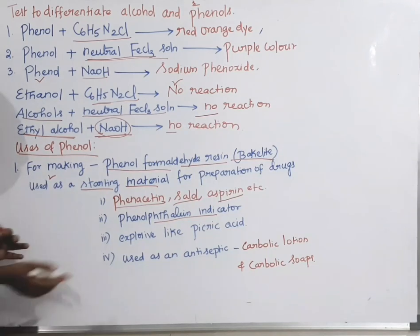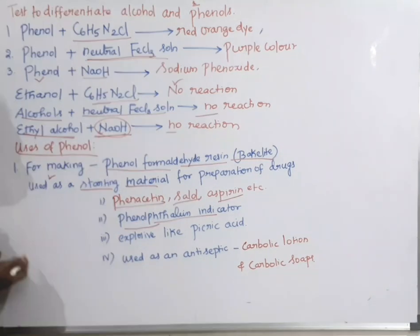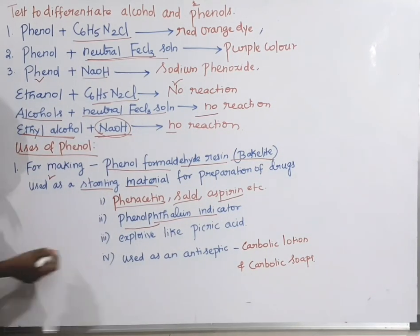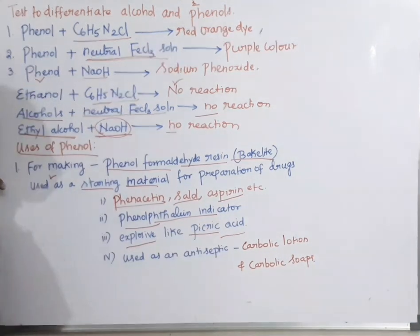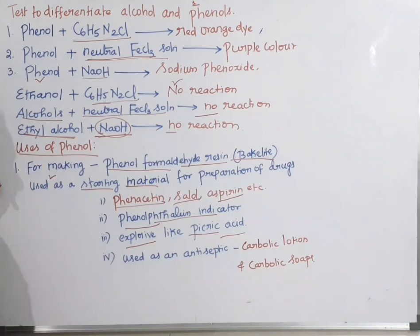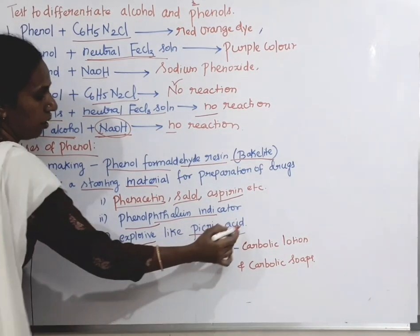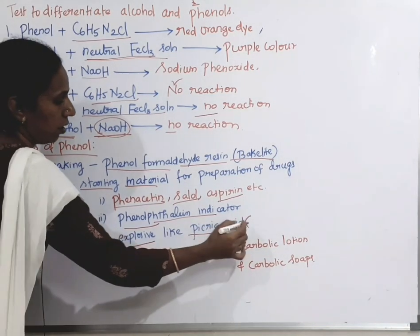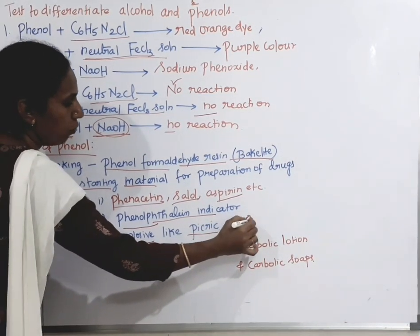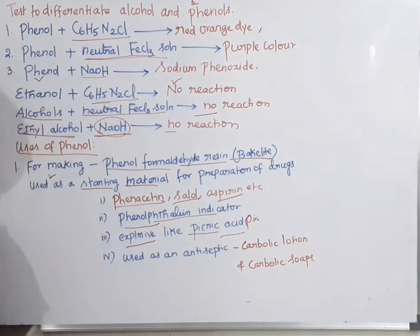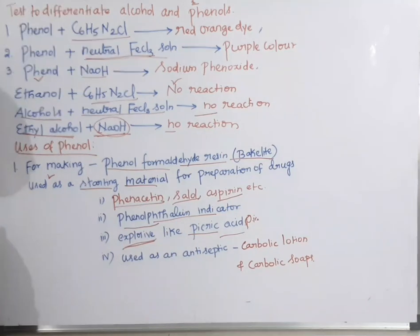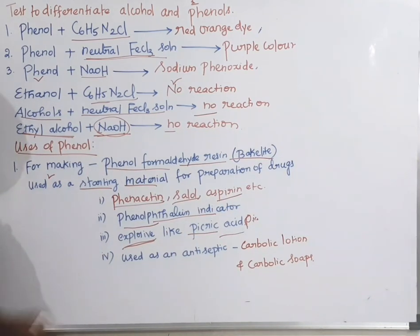Phenol is also used to make picric acid, that is 2,4,6-trinitro picric acid, which is an explosive. So for making explosives, phenol is used.